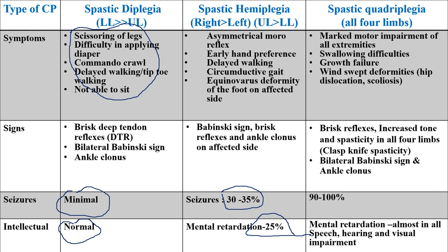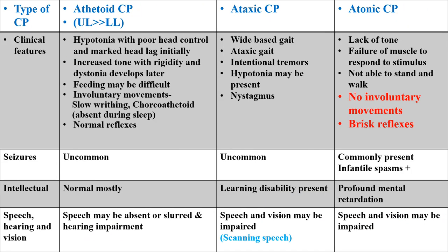Spastic quadriplegia is the most severe form of CP. There is marked motor impairment of all extremities. Due to bulbar involvement, the patient has more chances of aspiration pneumonia and swallowing difficulties, along with growth failure, windswept deformity, hip dislocation, and scoliosis. Brisk reflexes, increased tone, spasticity in all four limbs, clasp-knife spasticity, bilateral Babinski sign, and ankle clonus are present. Almost 100% of patients have seizures, mental retardation, and speech, hearing, and visual impairment.